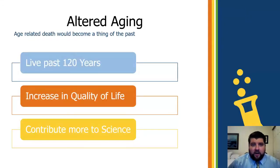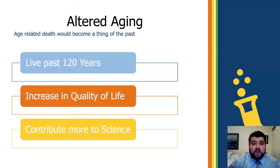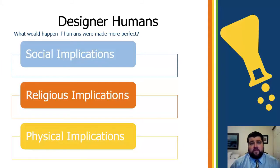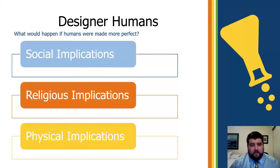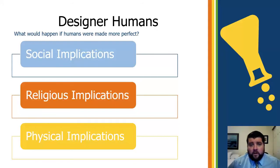One of the things about genetic modification is altered aging — we're going to be able to live past 120 years, increase quality of life, and ultimately contribute more to science. If you're a Star Trek fan, think about the Wrath of Khan as an ethical dilemma presented by genetic modification. There will be huge societal, religious, and physical implications if this is not legislated properly. You can discuss with your students what would happen if humans were made more perfect and how that fits into a Christian worldview.